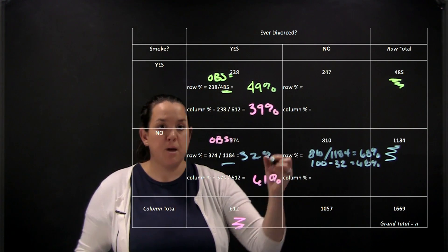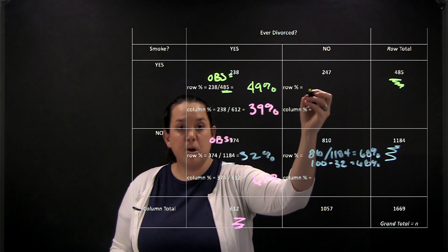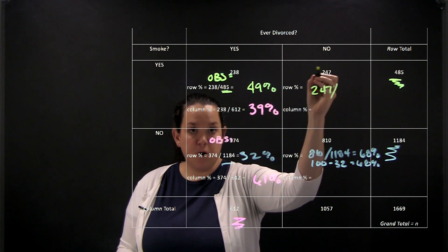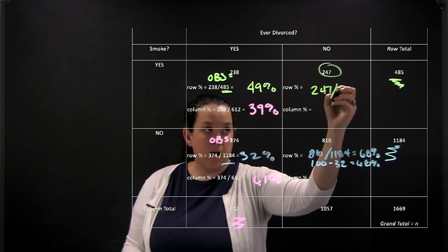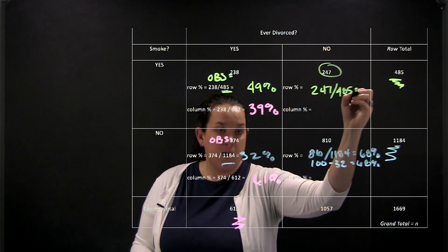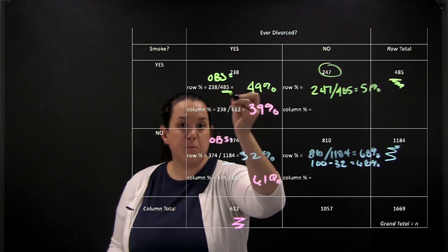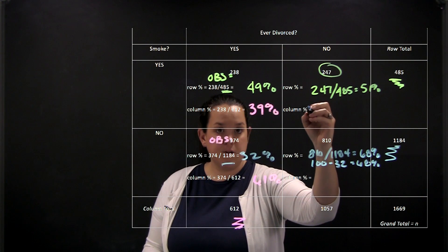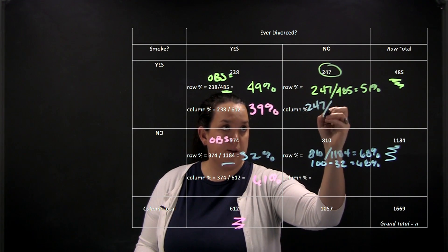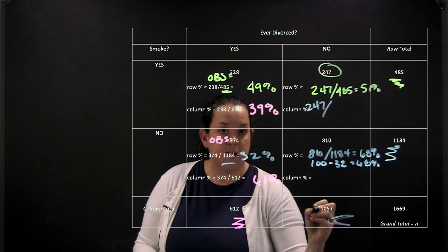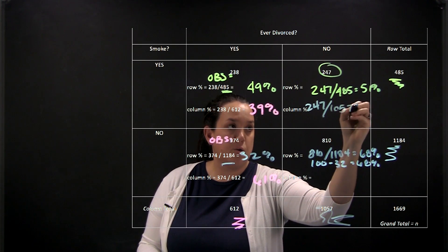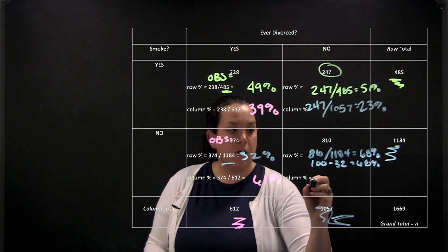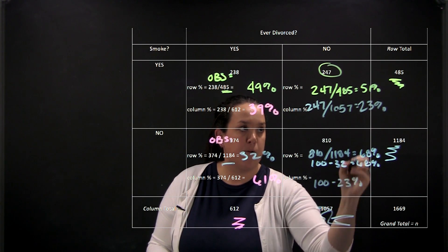Practicing one more time: the row percent for no divorce but yes smoking uses 247 as the numerator — the observed count — divided by 485, giving 51%. The rows add up to 100%, confirming that. For the column percent, 247 is divided by 1057, which is the column total, giving 23%. Then for the remaining cell in that column, you take 100 minus 23 to get 77%.